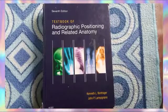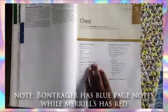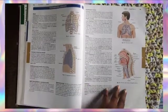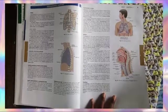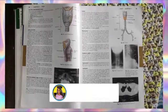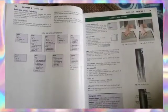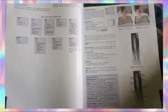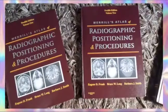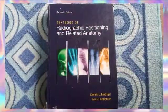The first thing worthy of mentioning when we consider the Bontrager book versus Merrill's: Bontrager is more concise — not only in its contents, but also in the number of books required to cover the topics. Bontrager is one book. I was able to get some recordings of the Bontrager textbook because I don't have that book; I always use the online copy. All the positioning and anatomy is in one book, whereas Merrill's has three volumes. I have the twelfth edition, and my friend has the seventh edition.